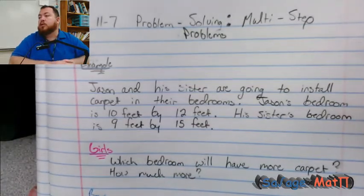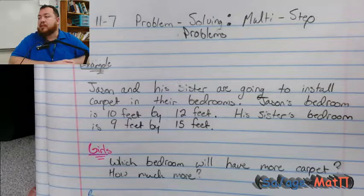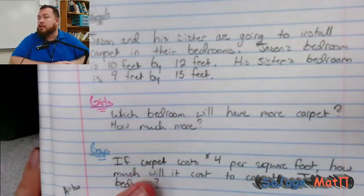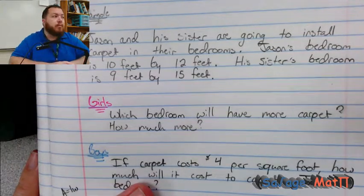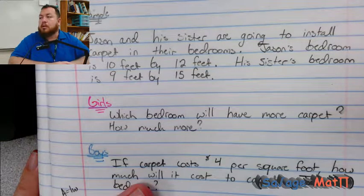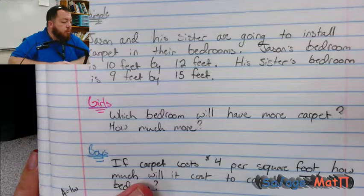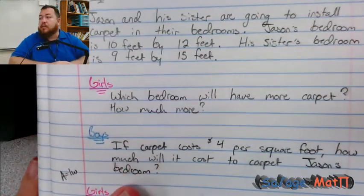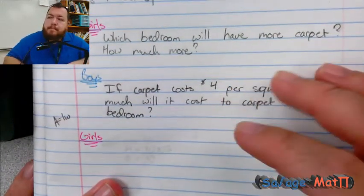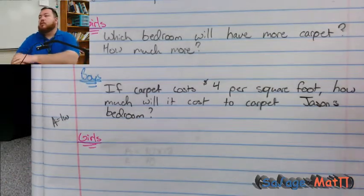The first problem: Jason and his sister are going to install carpet in the bedrooms. Jason's bedroom is 10 feet by 12 feet; his sister's bedroom is 9 feet by 15 feet. I split this question into two parts — if you were a girl you had a certain question, if you were a boy you had a different question. The girls' question was: which bedroom will have more carpet, and how much more?